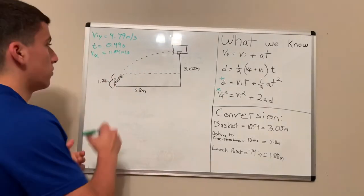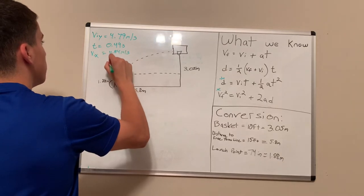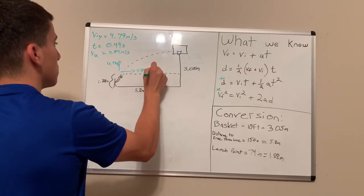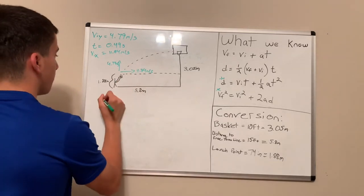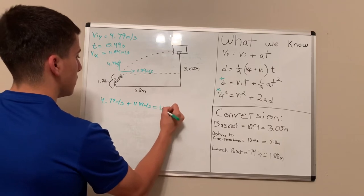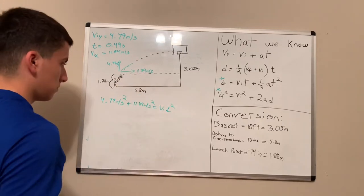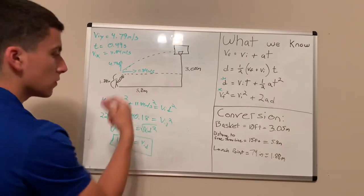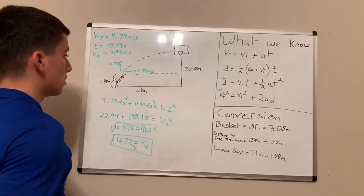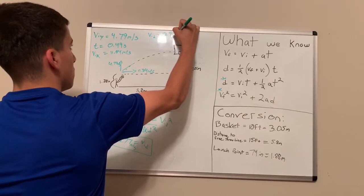Now that we have the velocities in the y and x-directions, we can use the Pythagorean theorem to solve for the diagonal velocity. Going up it's 4.79 m/s and in the x-direction it's 11.84 m/s. Using the Pythagorean theorem, the diagonal velocity V_id equals 12.77 meters per second.